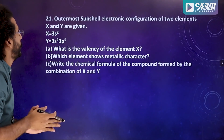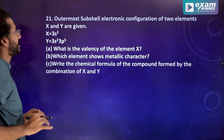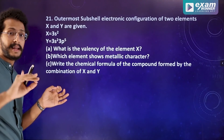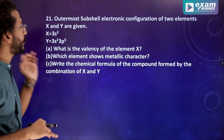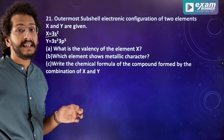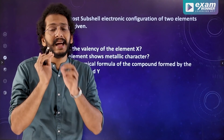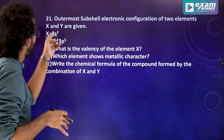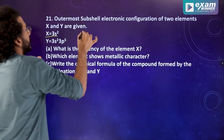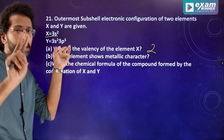Question number 21: the outermost subshell electronic configurations of two elements are given. Element X has configuration 3s2, and element Y has configuration 3s2 3p5. The valency of X: outermost shell has 2 electrons, so valency is 2.